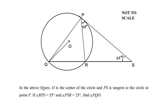Hello and welcome to my channel. In this video we are going to solve an example on circles using circle theorems. In the above figure, O is the center of the circle and PS is a tangent to the circle at point P. Angle RPS is given as 55 degrees, angle PSR is given as 25 degrees, and we need to find angle PQO.